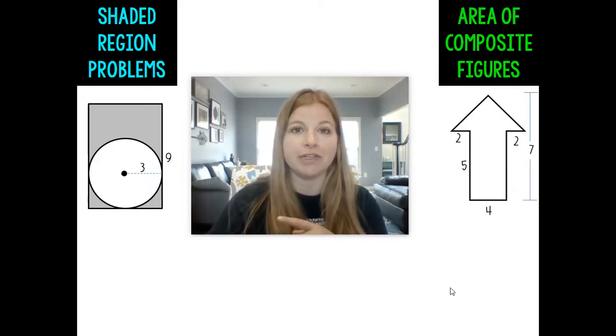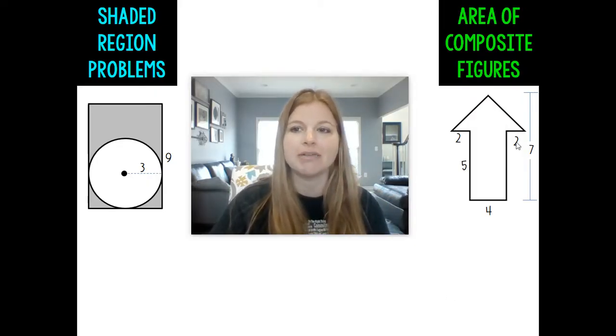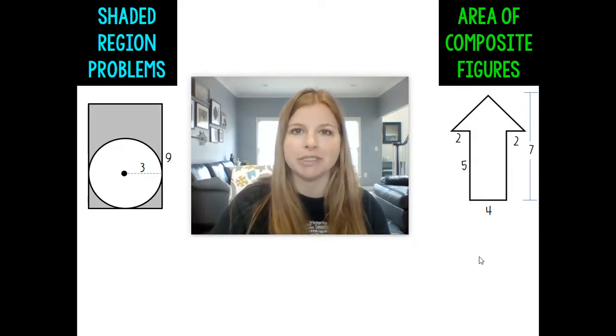I'm gonna do the right hand side first for composite and then we're gonna go to shaded and then do some more practice. So first of all when I see this figure I know this is not a regular polygon, it's like an arrow, but I can break it apart into two shapes that I do know how to calculate the area of.